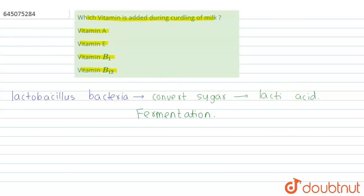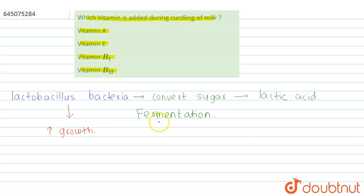With the help of Lactobacillus bacteria, we perform fermentation and curdling of milk. After fermentation, we heat the milk at a certain high temperature and add a small amount of old curd. This is done to increase the growth of Lactobacillus, leading to more flourishing of the bacteria.